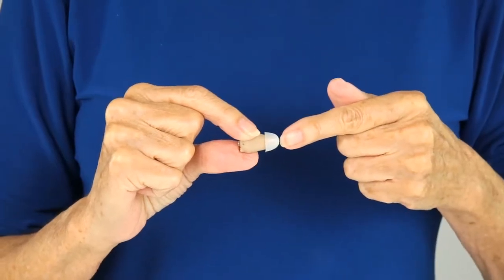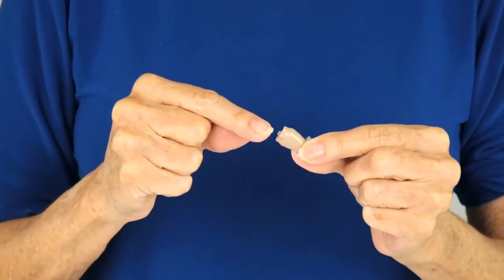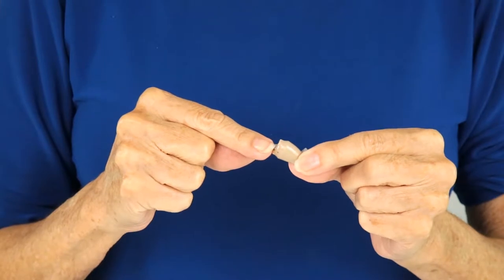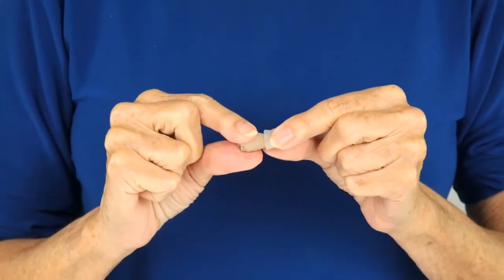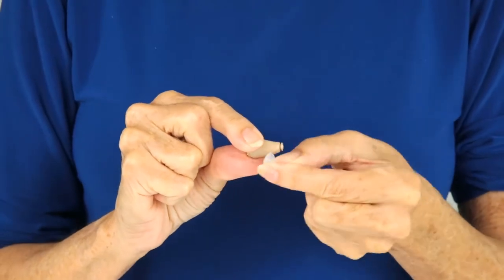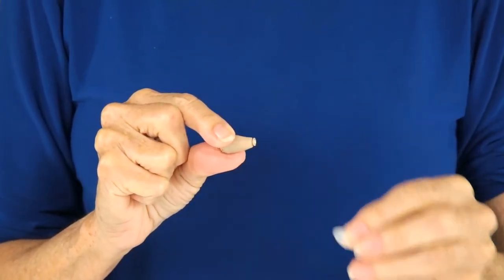To change the ear cap on the inner ear hearing amp, first make sure that the device is powered off. Once the device is powered off, peel the old ear cap off the narrow end of the hearing amp.